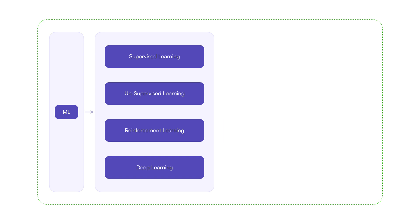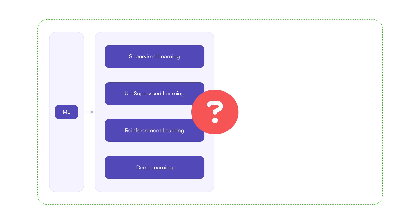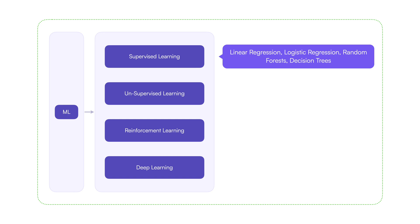Can you think of some algorithms or techniques used in each of the ML learning types? The commonly used algorithms in supervised learning are linear regression, logistic regression, random forests, and decision trees.